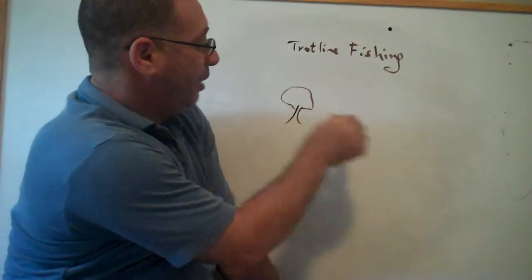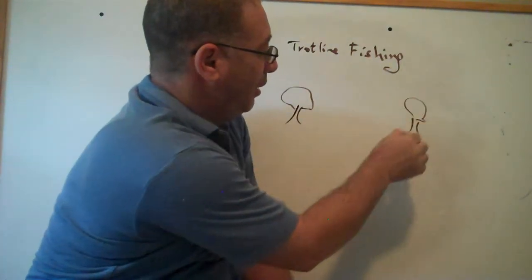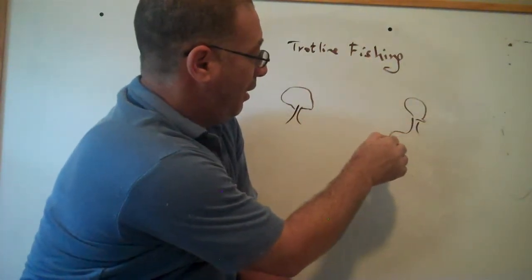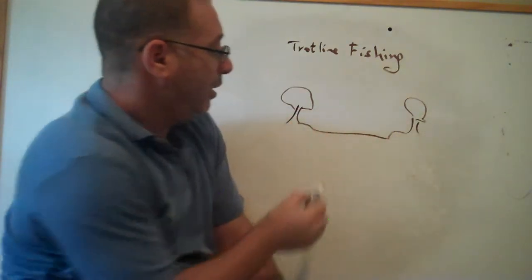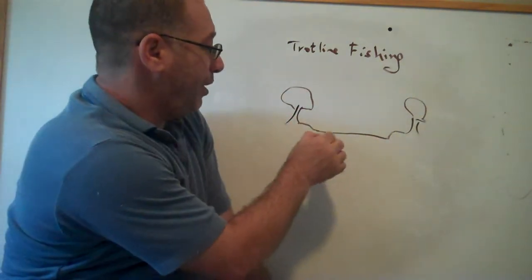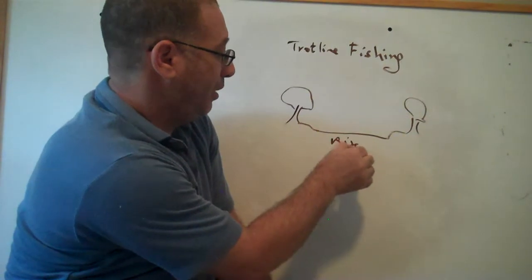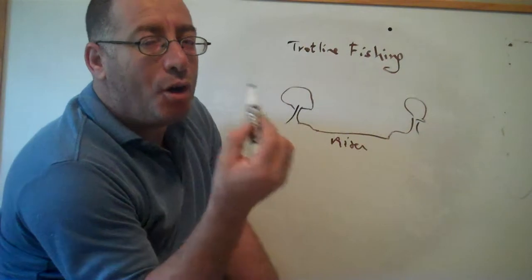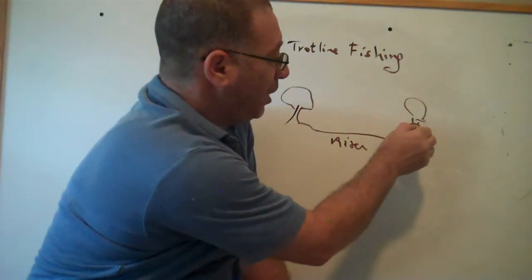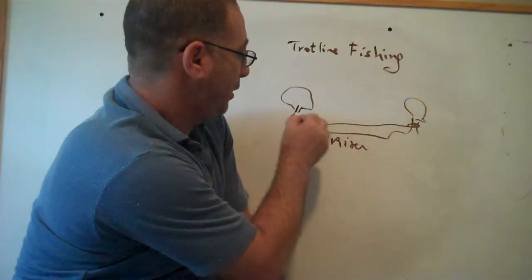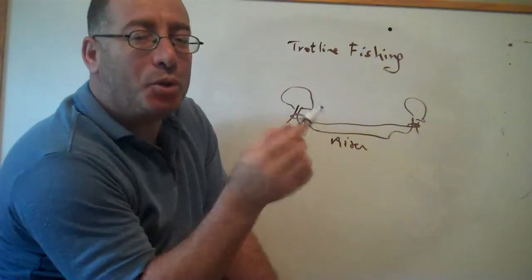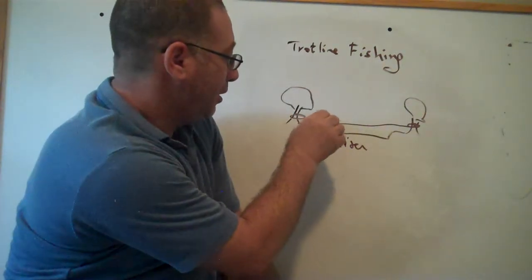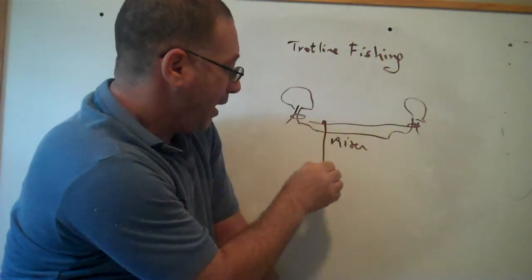We have a tree here, another tree here, and this is the river. Then you put a rope from here, attached from this tree, rope like this. And they put small ropes like this.